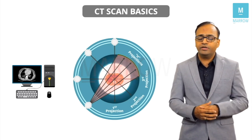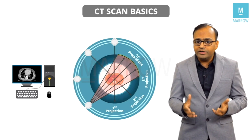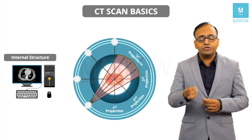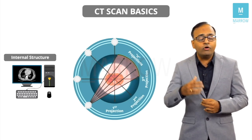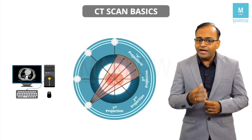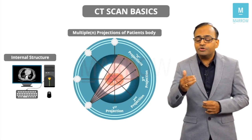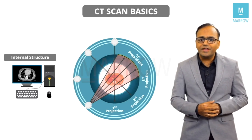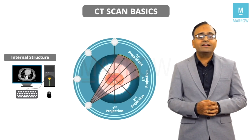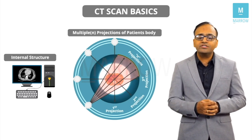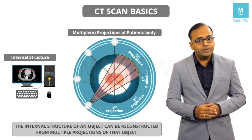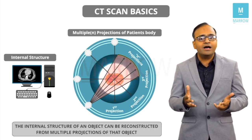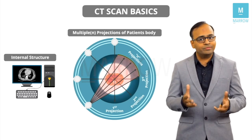What are you able to see in this particular image? In this image, what you are basically seeing is the internal structure of the patient's body. But from what data have I reconstructed this internal structure? I have reconstructed it from multiple projections — n number of projections of the patient's body. The basic principle of CT scan states that the internal structure of an object can be reconstructed from multiple projections of that particular object. Does it make sense now? Yes — this is how a CT scan basically works.